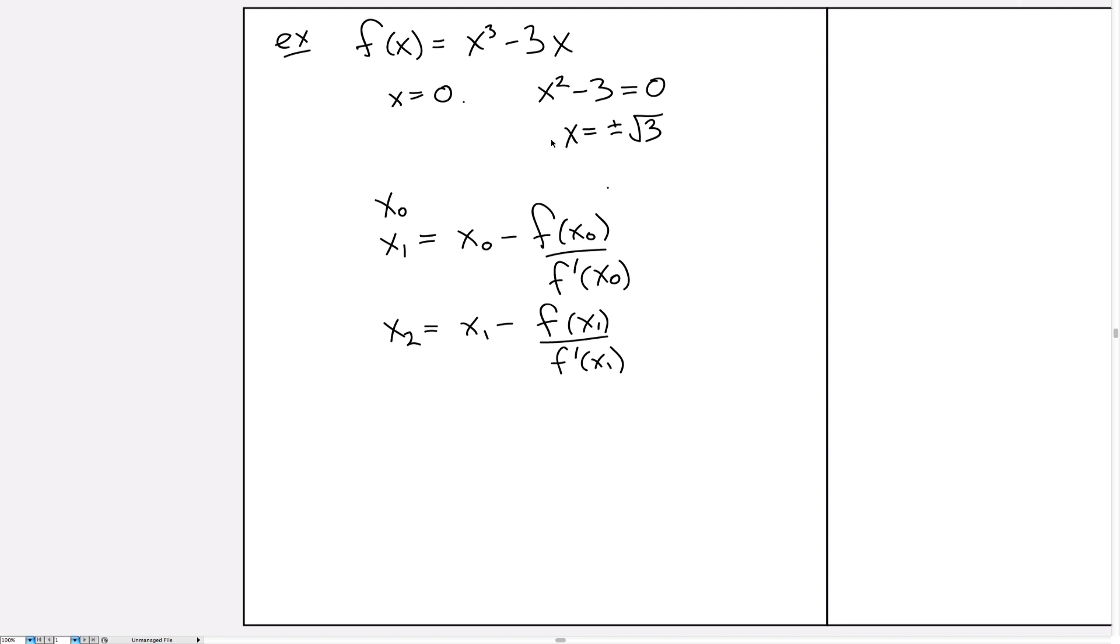So what we'd like to find out is how to choose x₀ so that the root we converge to is one of the other ones. In particular, we're interested in finding a decimal expression for √3, which is one of the other two roots of this function. Let's go over to Desmos and see how we can choose our x₀ appropriately.